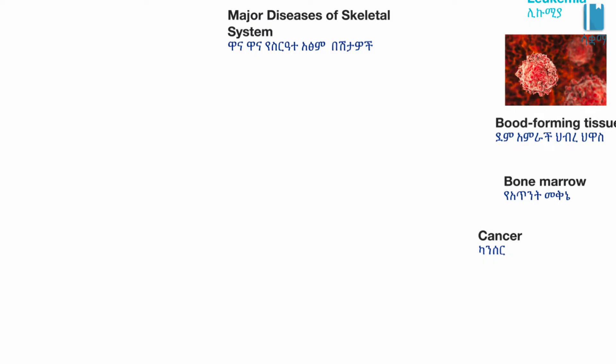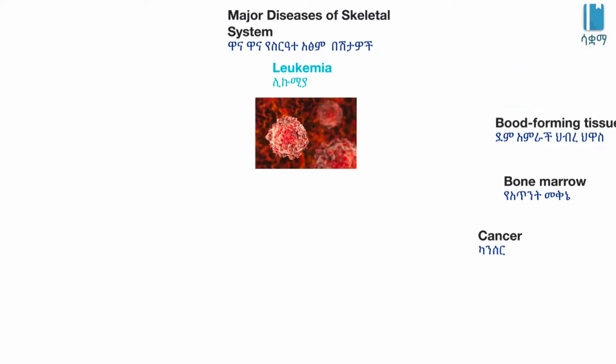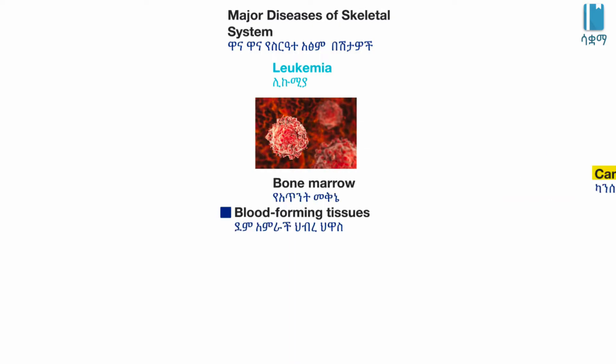Major diseases of the skeletal system: one is leukemia. Leukemia is a disease that affects the blood-forming tissues including bone marrow, and it involves abnormal blood cells such as white blood cells being produced.